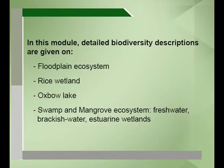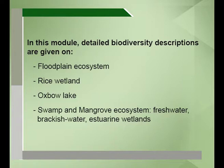In this module, detailed biodiversity descriptions — the flora and the fauna and the human impacts, or how these wetland ecosystems have been polluted or degraded — will be given on the floodplain ecosystem, the rice wetland, oxbow lakes found in north India, swamp, and the mangrove ecosystem, which includes the freshwater, brackish water and the estuarine wetlands.